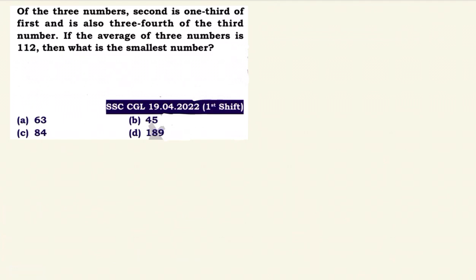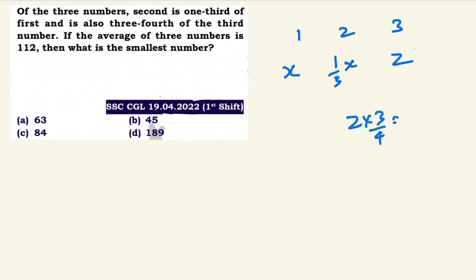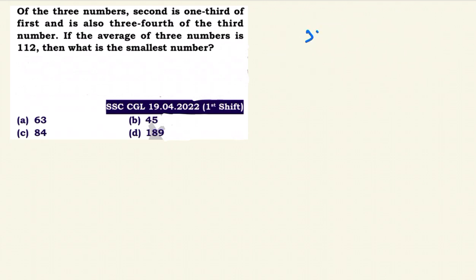Next question. Of the three numbers, the second is one third of the first and is also three fourths of the third number. If the average of the three numbers is 112, then what is the smallest number? Let the three numbers be x, y, z. The second number is one third of x, and also three fourths of the third number z.